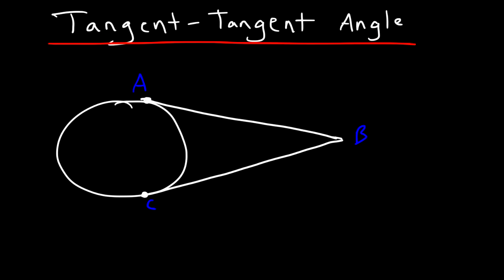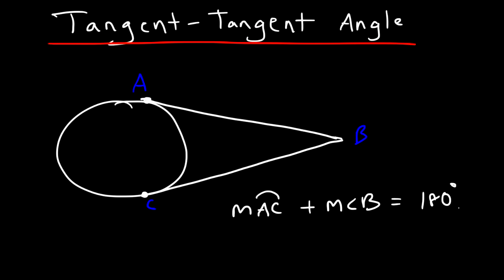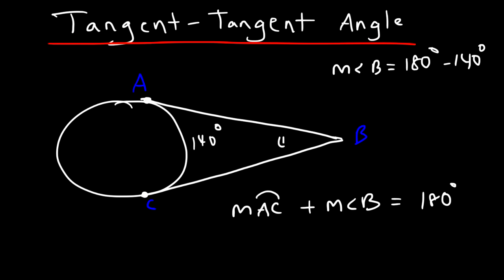One special theorem you need to know is that the measure of the minor arc AC plus the measure of the tangent-tangent angle, which is angle B, is equal to 180. So those two angles are supplementary. For example, if arc AC is 140 degrees, angle B is going to be 180 minus 140, so angle B is 40 degrees.